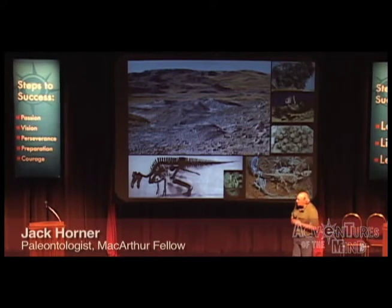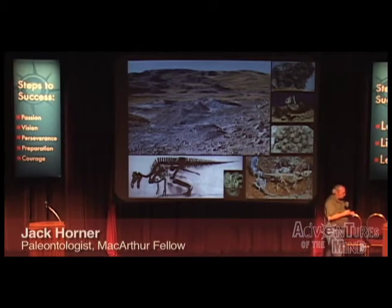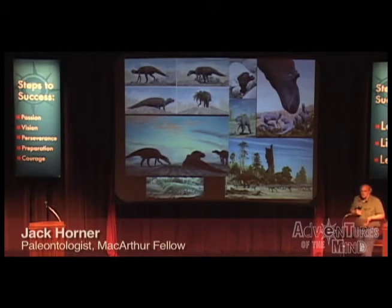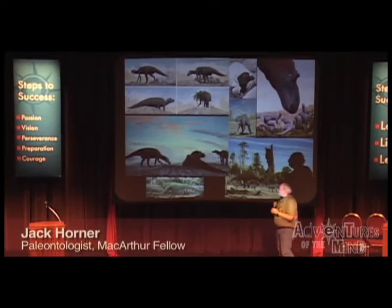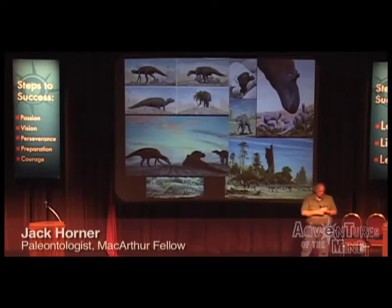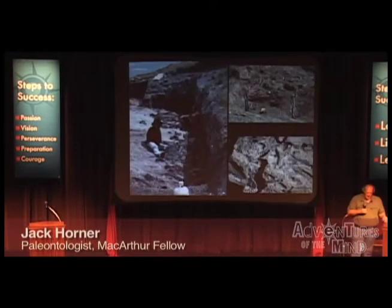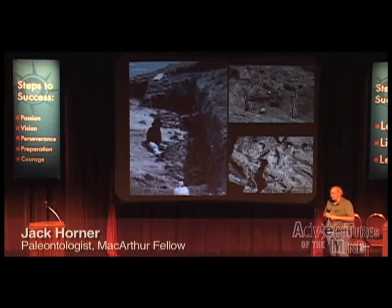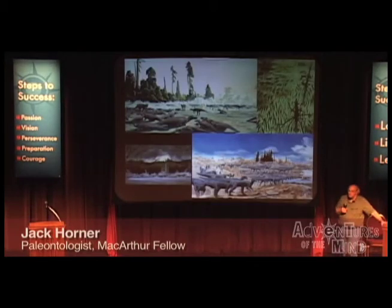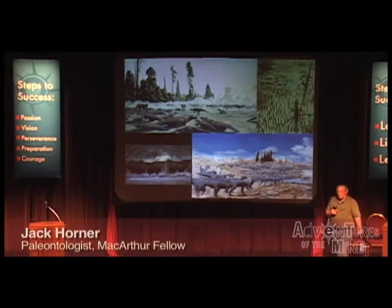We found the first dinosaur embryos. With those discoveries, we were able to hypothesize that dinosaurs were social animals that cared for their babies — the first time we could see that dinosaurs were pretty cool animals. We found out that dinosaurs lived in nesting colonies, and we also found massive accumulations of thousands of bones all together in one place, showing us that dinosaurs traveled in gigantic herds and lived in gigantic colonies.